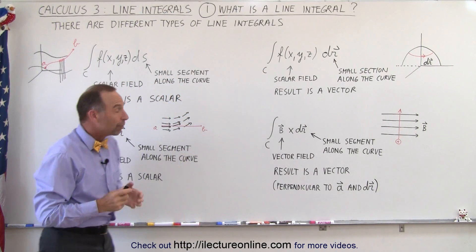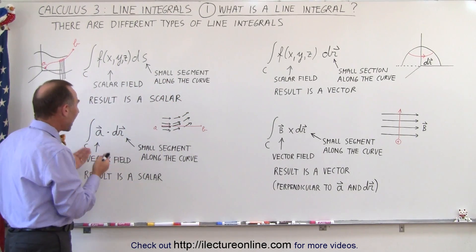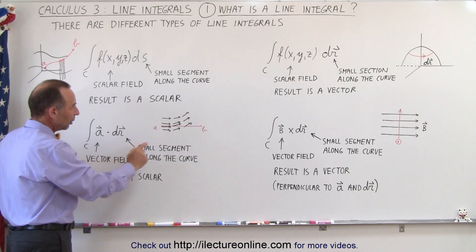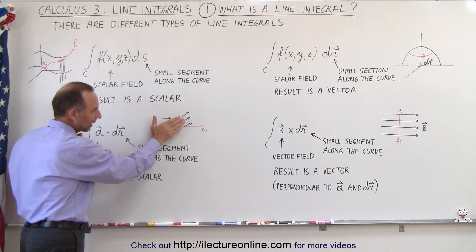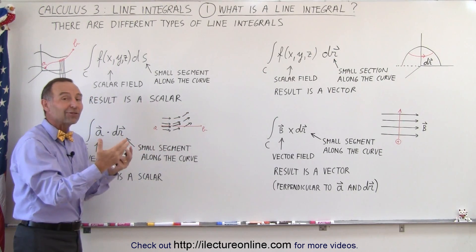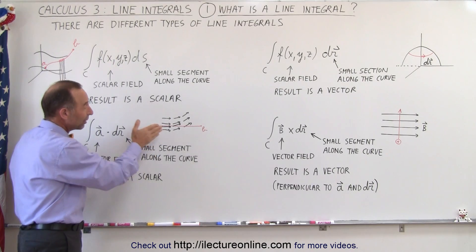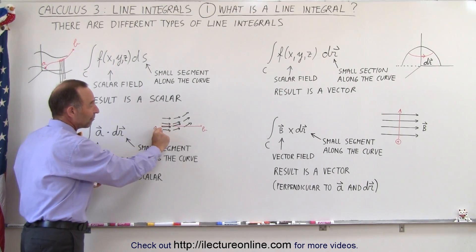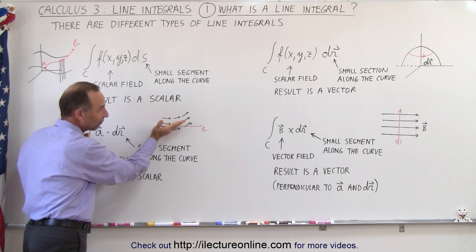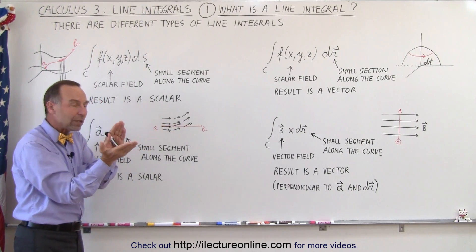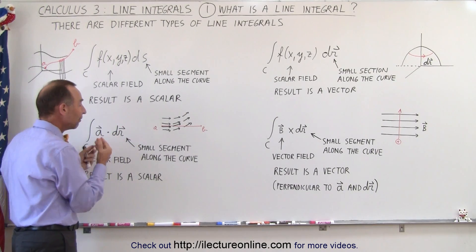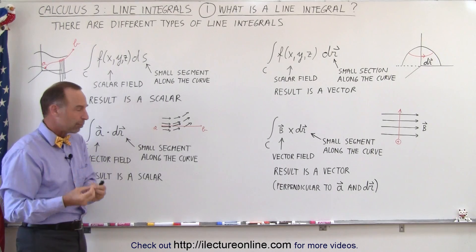Now the type of line integrals that are probably most common is where we actually travel through a vector field. For example, we can have a vector field that's directed like this so we can see that it changes direction, it looks like it's constant amplitude or magnitude but it does change direction. So if we travel from A to B, you can see that the interaction of our path and the direction of the vector field changes, the angle between the two directions change which means that we need to keep track of that via what we call a dot product.